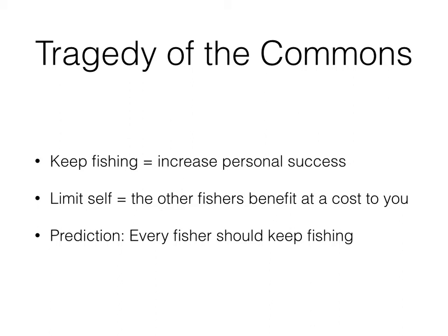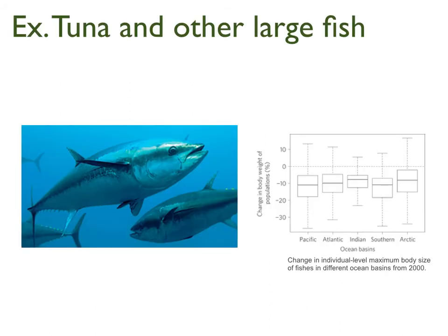This is why it's called a tragedy of the commons: common pool resources are highly prone to being depleted because you can't exclude other people, and the resource is subtractable, so no one has an incentive to stop their use. This is currently happening with tuna and other large fish populations. You can see the graph showing the change in individual body size from the year 2000 — just 10 years. Everything is below the dashed line of zero, meaning all fish populations since 2000 have decreased by about 10% in size.